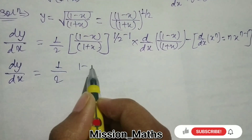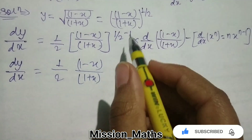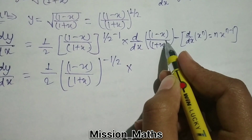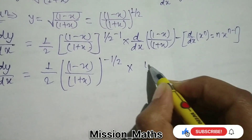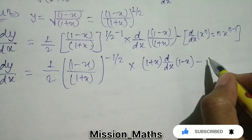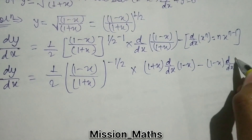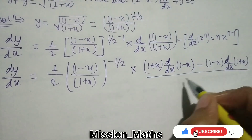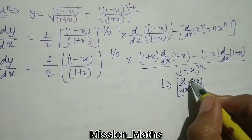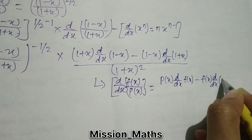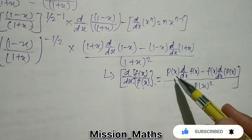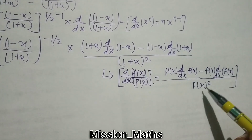This gives 1 upon 2 times (1 minus x) upon (1 plus x) raised to minus half, multiplied by the differentiation of (1 minus x) upon (1 plus x) with respect to x. By using the quotient rule, it will be: (1 plus x) times differentiation of (1 minus x) minus (1 minus x) times differentiation of (1 plus x), all upon (1 plus x) whole square. The quotient rule formula is: differentiation of f(x) upon p(x) equals p(x) times f'(x) minus f(x) times p'(x), upon p(x) whole square.